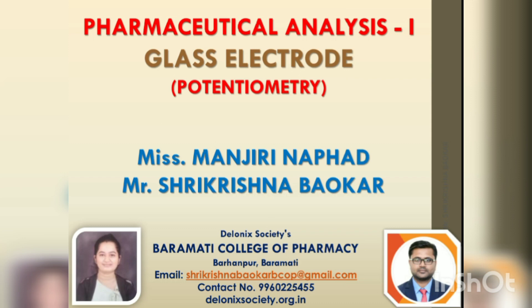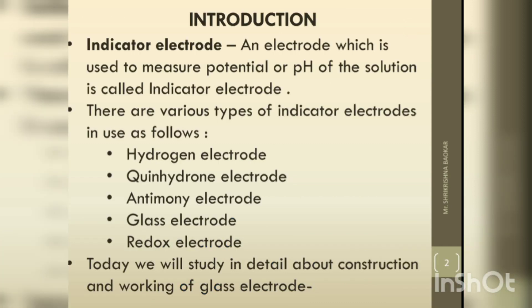We will start from the basic indicator electrode. An electrode which is used to measure potential or pH of the solution is called indicator electrode. There are various types of indicator electrode in use: hydrogen electrode, quinhydron electrode, antimony electrode, glass electrode, and redox electrode.